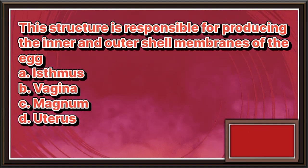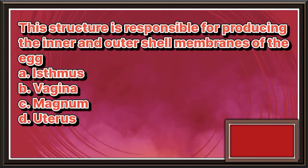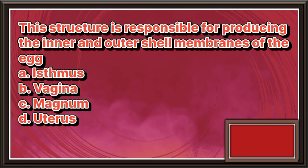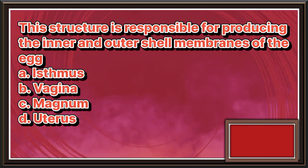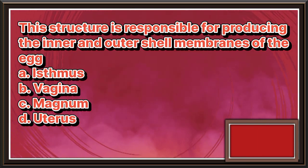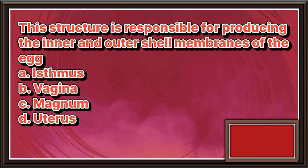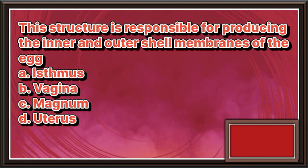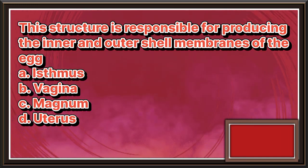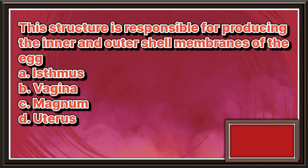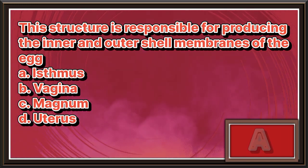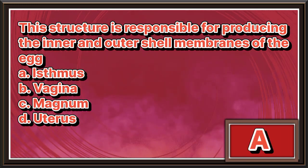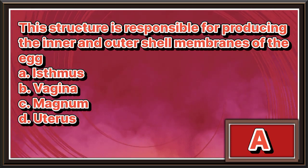This structure is responsible for producing the inner and outer shell membranes of the egg. A. Isthmus. B. Vagina. C. Magnum. D. Uterus. The answer is letter A.